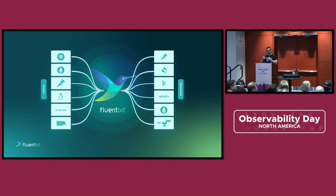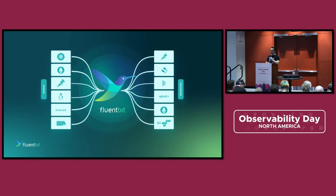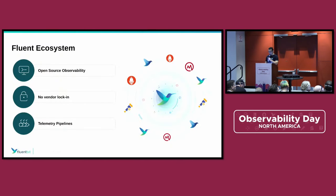What FluentD does is pretty much connect multiple sources to multiple destinations, but in the middle you can do a lot of processing. Processing means: if you're in metrics, add labels or remove labels; if you're in logs, do enrichment — and all things you can think of are possible.